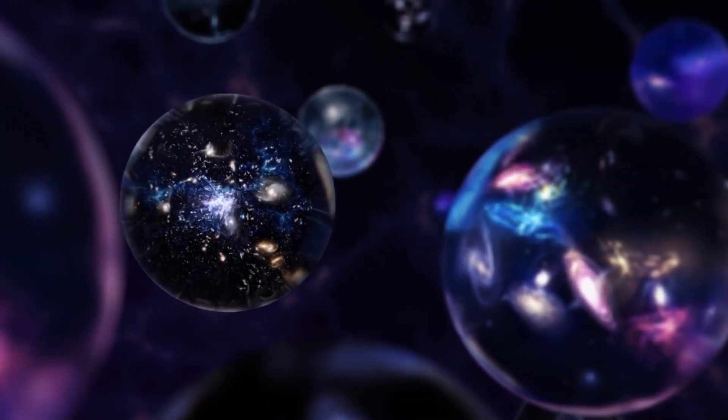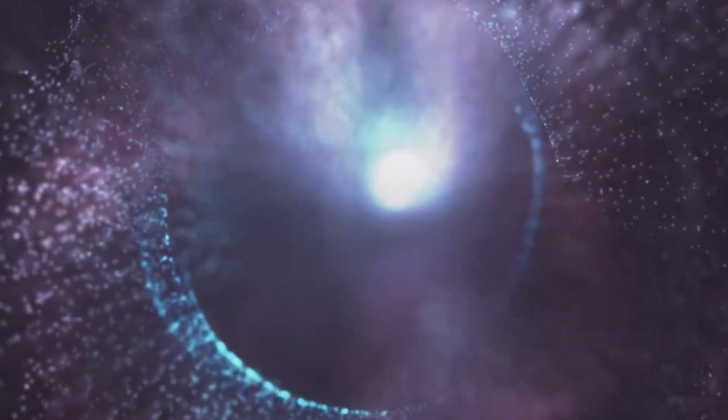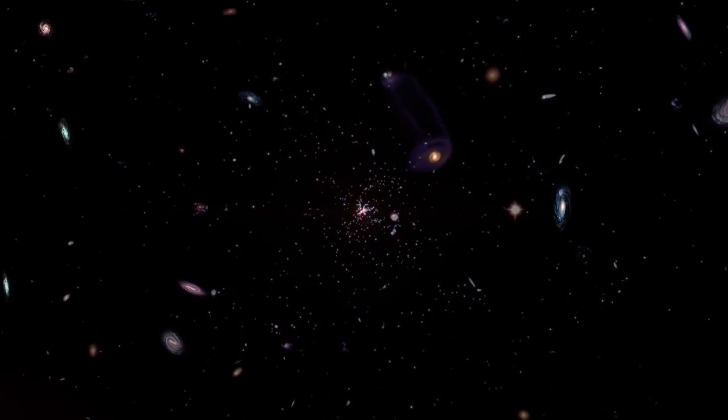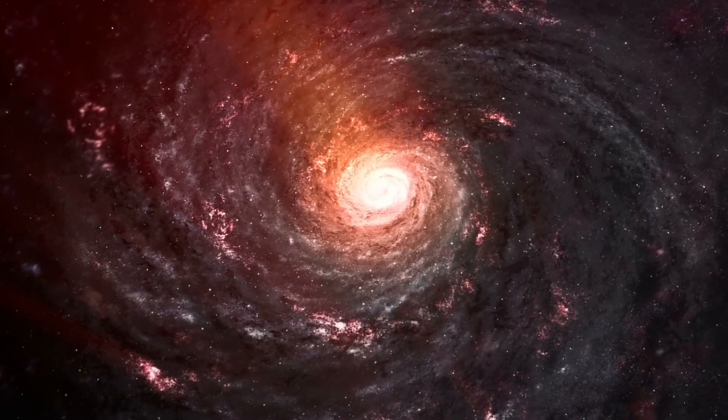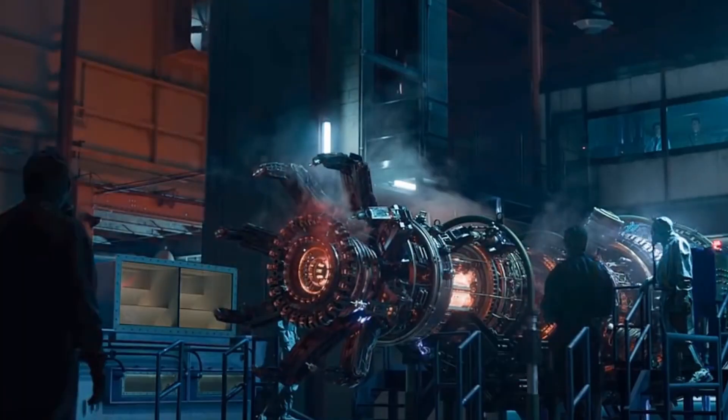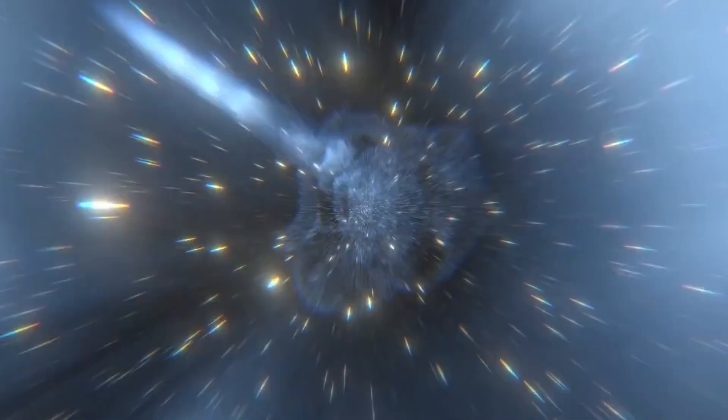Even though particle configurations can repeat themselves, the odds of finding a portal to a parallel universe that's exactly like our own is close to zero. Think about it. There are novemvigintillion particles in our universe. That's the number one followed by 90 zeros. Before the particles can arrange themselves in identical ways to create a parallel universe exactly like ours, they will arrange themselves in other ways and create a totally different universe in which life forms itself may not exist. And these universes will also have completely different laws of physics.